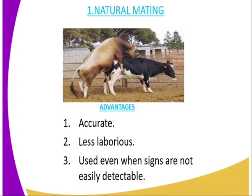In the natural mating method, you can see there is a bull here and also there is a cow. In this method, the penis is used to insert the sperm or the semen containing sperm into the female reproductive system directly.